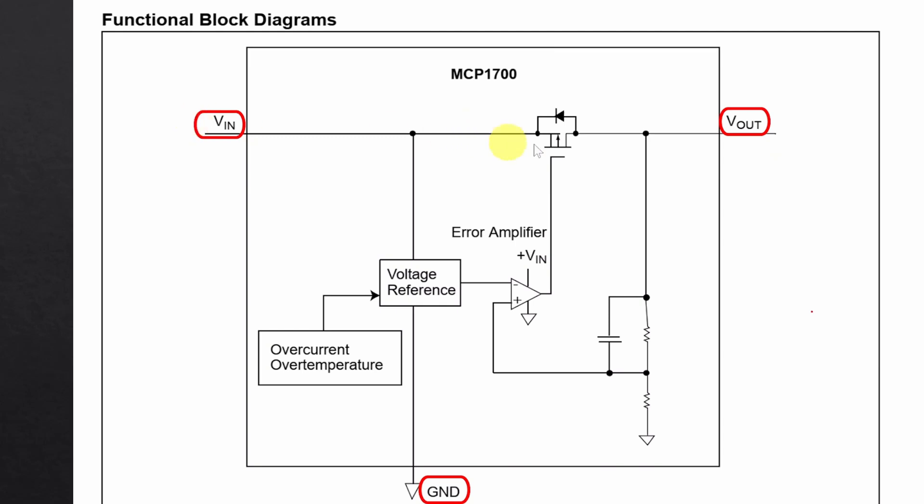A CMOS field effect transistor is connected between the input and output pin of the regulator. When we apply power to the VIN pin, current passes through the transistor to the VOUT pin. So the voltage drop across the transistor will be the voltage drop across the regulator.